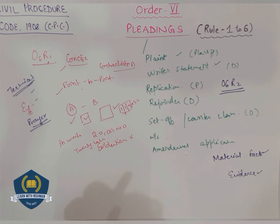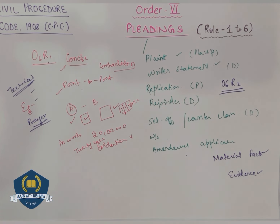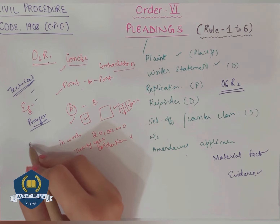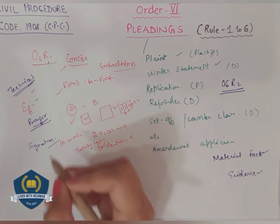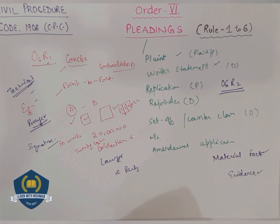In the prayer clause, the plaintiff humbly requests and submits to the court whatever he wants - that the defendant should give this, or do this. For example: court may direct the defendant to pay 2 lakh rupees, or court may direct the defendant to specifically perform the contract according to its real terms. If you want your contract to be performed, you want the court to get your contract performed. Then you write: para 1, 2, 3 are true to my knowledge, and para 4, 5, 6, 7, 8 - whatever they are - you believe to be true according to information received. At the end, there are signatures - signatures of the lawyer as well as the party.